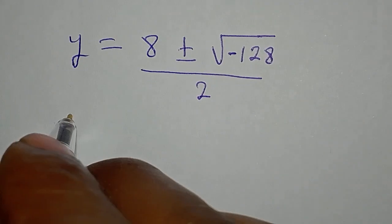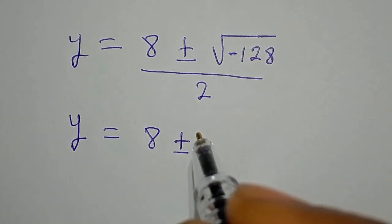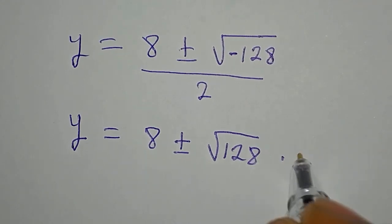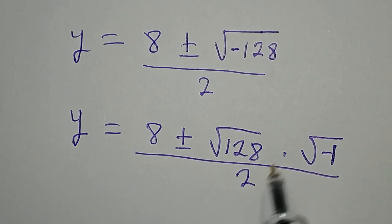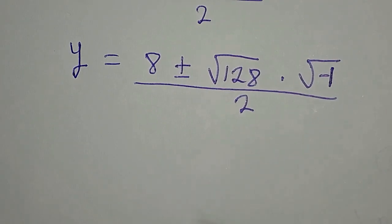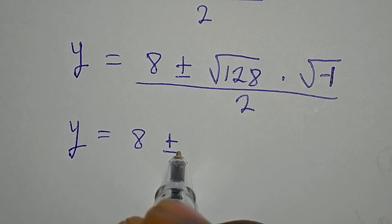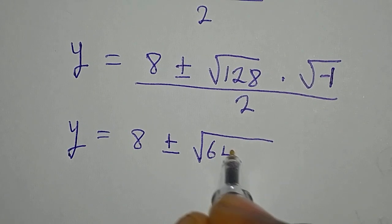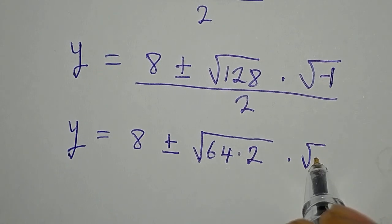Continuing: y equals 8 plus or minus the square root of negative 128. We can write this as the square root of 64 times 2 times the square root of negative 1, all over 2.